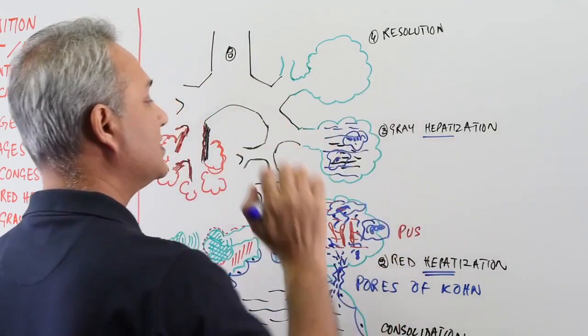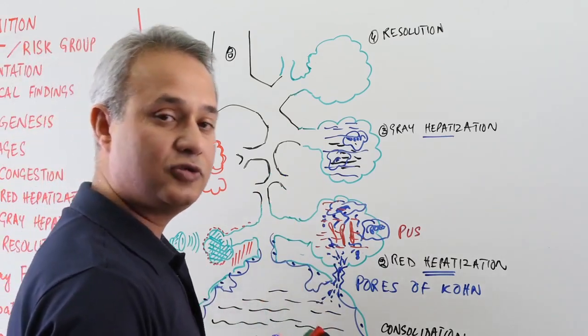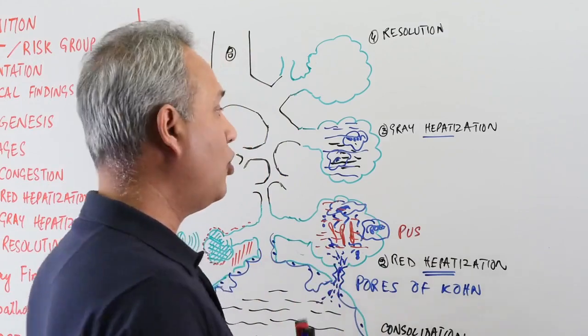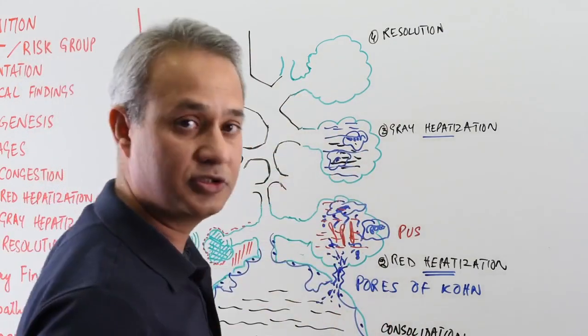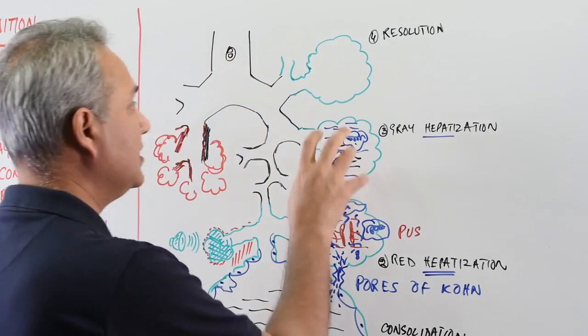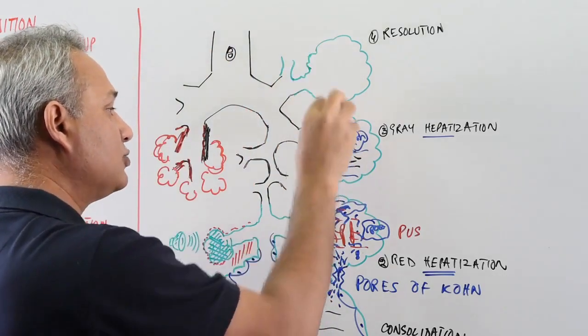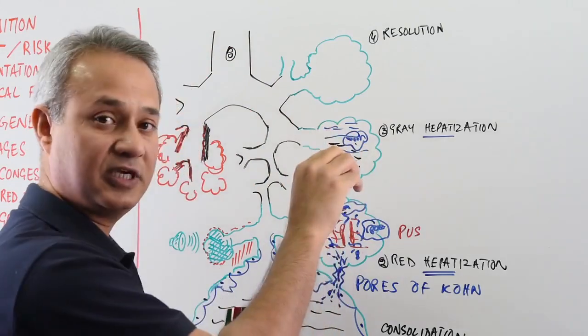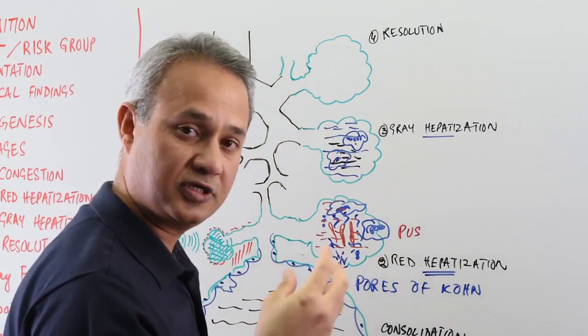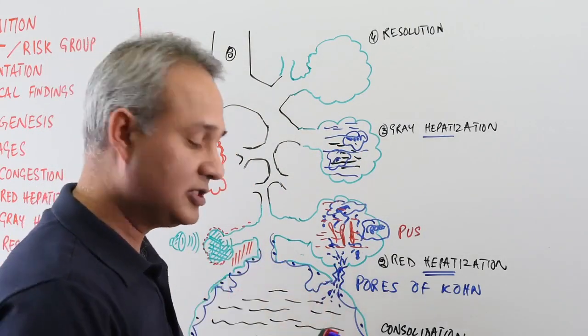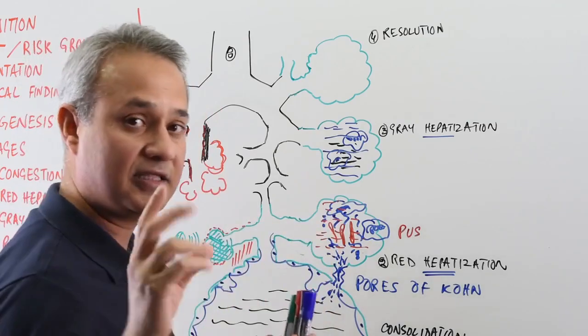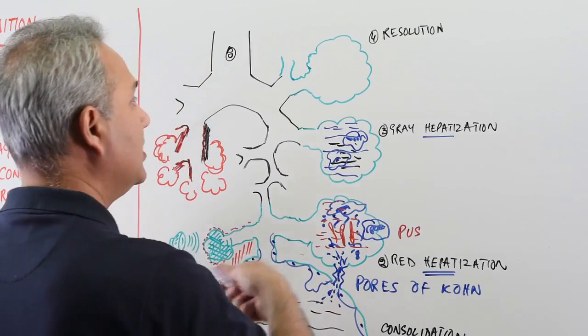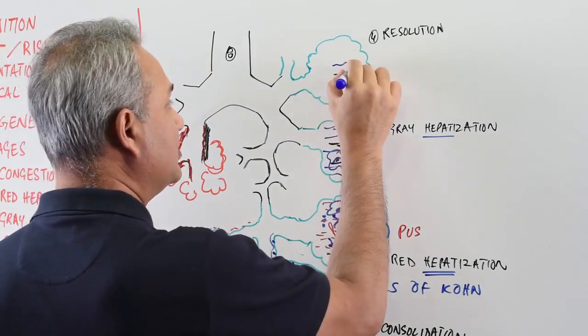Then starts the resolution. So resolution is a normal outcome. Ideally, all pneumonias should reach the resolution. And what is that? The cells here, the macrophages would start eating up and digesting the substances present over here. The phagocytosis would occur. Neutrophils would do that, macrophages would do that. And the debris will either, there are three things that can happen. Number one, the lysed debris.